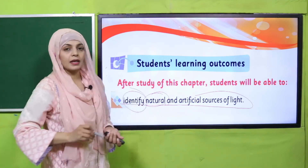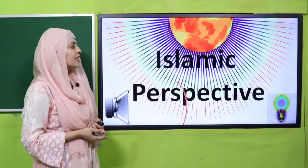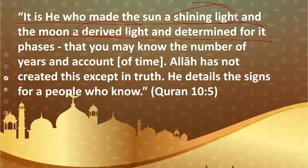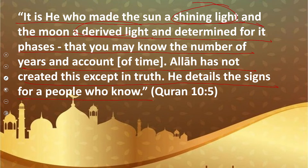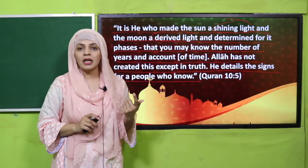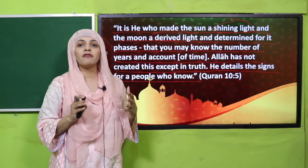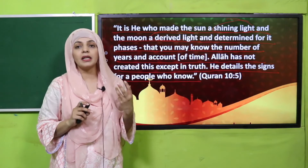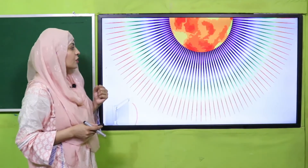Let's look at the Islamic perspective. Allah says in the Quran: 'It is He who made the sun a shining light and the moon a derived light, and determined for its phases that you may know the number of years and the account of time. Allah has not created this except in truth; He details the signs for people who know.' So light is so important — the moon shines at night, the sun shines during the day, and the phases of the moon help us track days, months, and years.